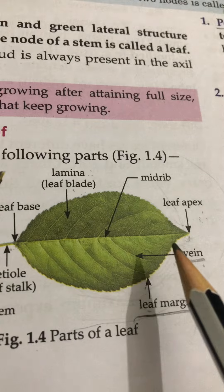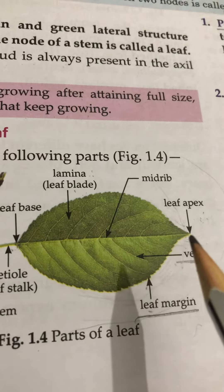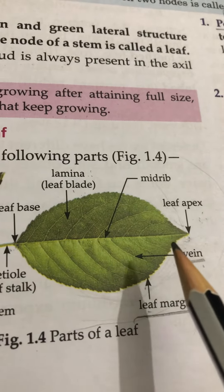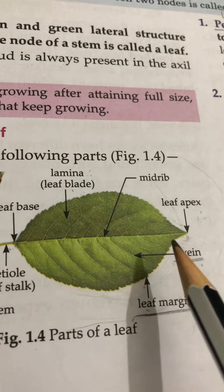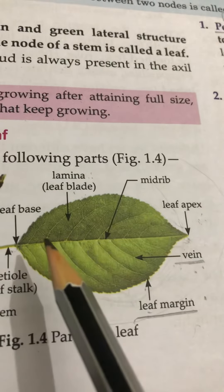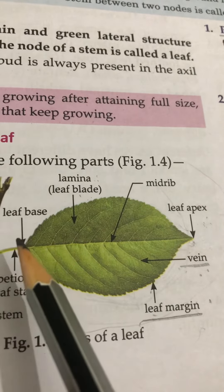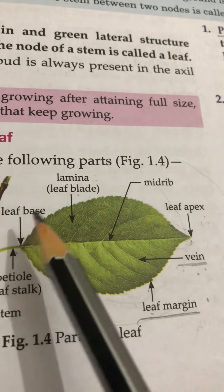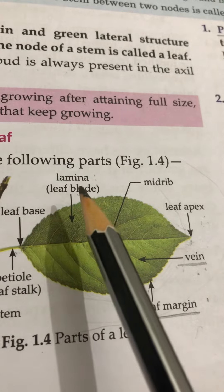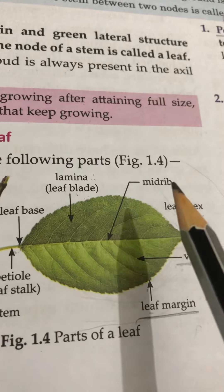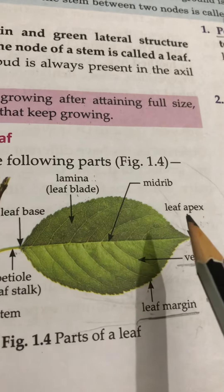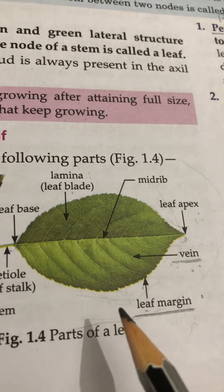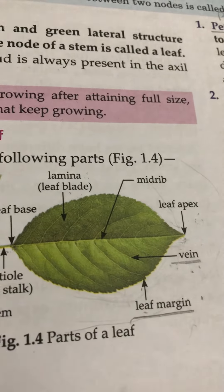Whenever you are asked to draw and explain the structure of a leaf, you will be writing the names of these parts: leaf base, lamina, midrib, apex, veins, and leaf margin. Thank you.